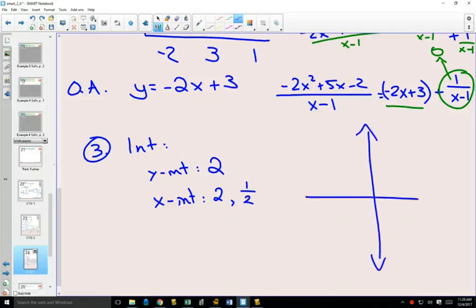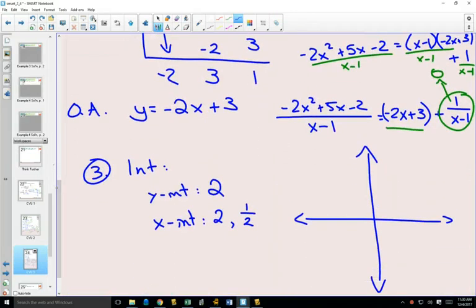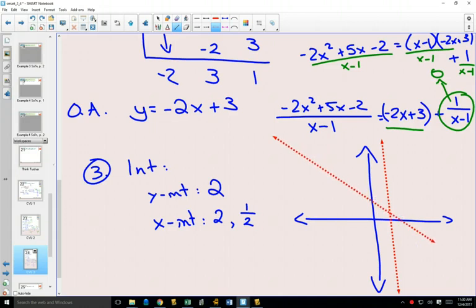So we put in all the information that we have so far. We might need to find some more points. But we have a vertical asymptote at x equals 1. We have an oblique asymptote. That one's really crooked. Let's put some points. Our oblique asymptote has a y-intercept of 3, a slope of negative 2, down 2 over 1.